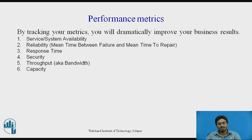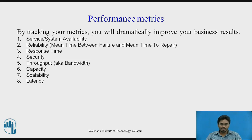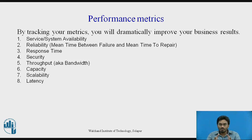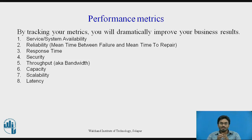Numbers six, seven, and eight — capacity, scalability, and latency — play an important role in identifying the overall quality of the system. Capacity refers to how much storage is provided. Scalability determines whether scaling features are available. Latency is also critical: if you have uploaded 1 GB of data and an analytical model running in the backend takes too long to process, it impacts reliability and response time. High latency degrades response time, reliability, and the overall service quality.